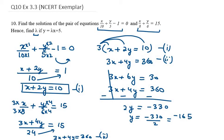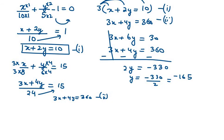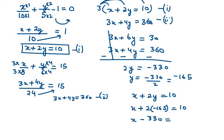Now we have the value for y, so we need to find the value for x. Using equation number 1: x plus 2y equals 10. Substituting y equals minus 165: x plus 2 times minus 165 equals 10, so x minus 330 equals 10. Therefore x equals 10 plus 330, which is 340. So x is 340 and y is minus 165.